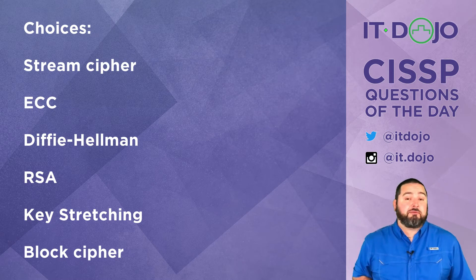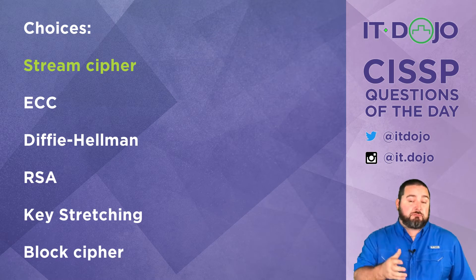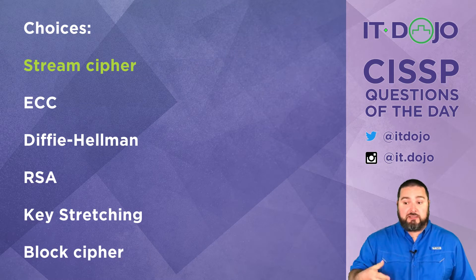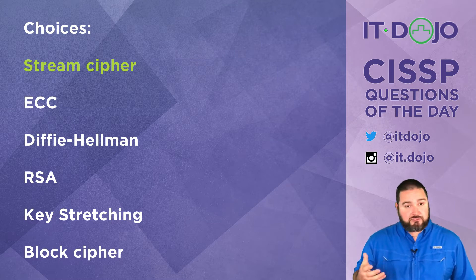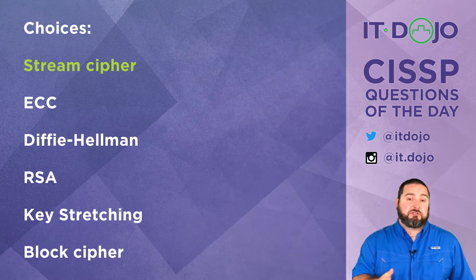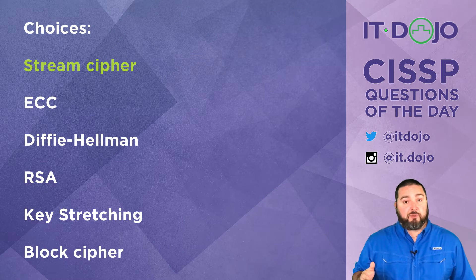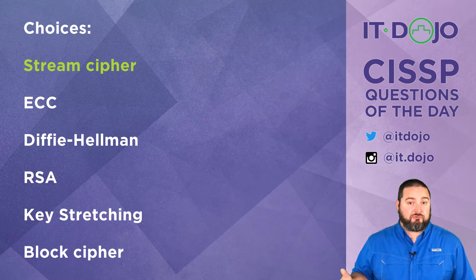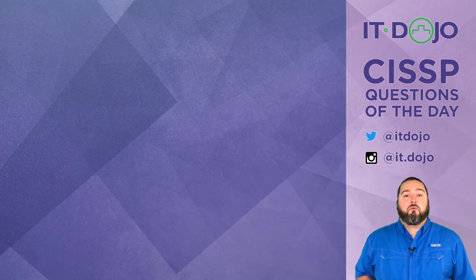The answer you're looking for is a stream cipher. Stream ciphers operate by using a key stream generator, which produces a seemingly endless stream of ones and zeros that are then bit by bit exclusive OR'd with your plain text data. The resulting output is called ciphertext. On the receiving side, you produce that same key stream and exclusive OR it with the ciphertext to get decryption — you get the plain text back.